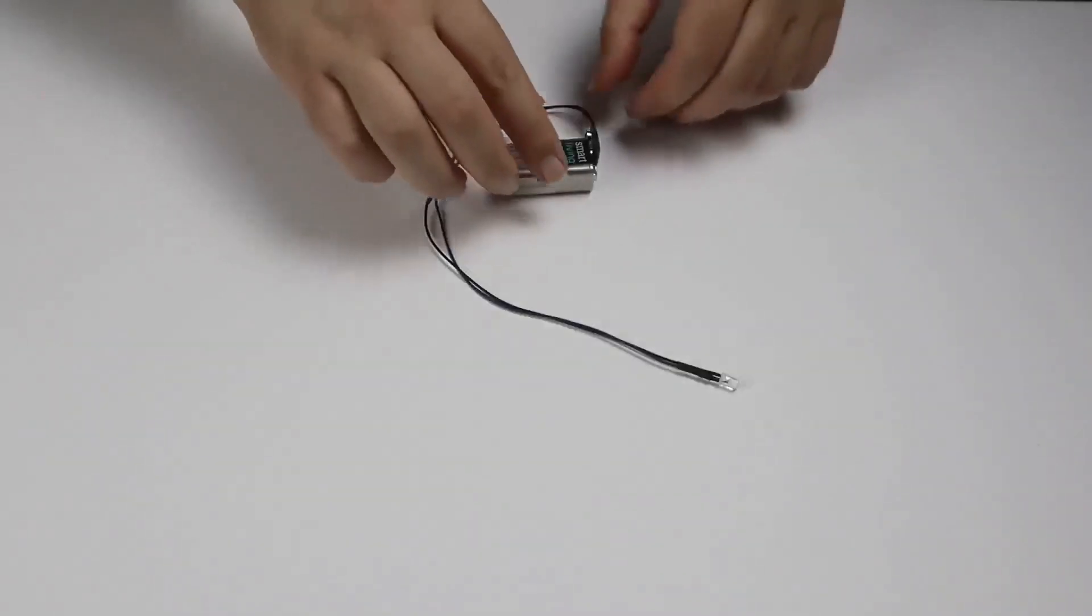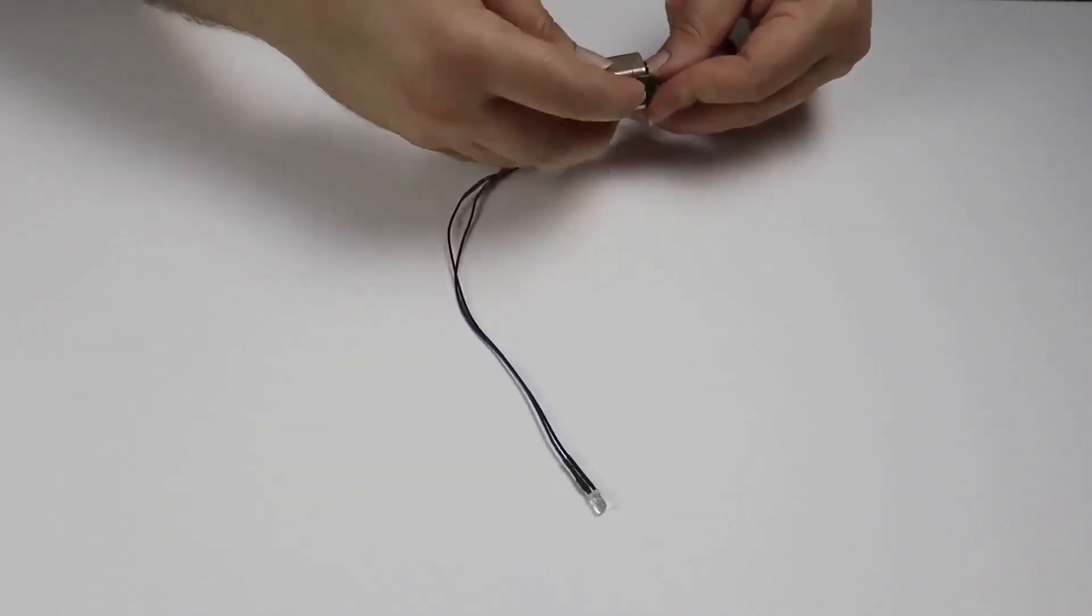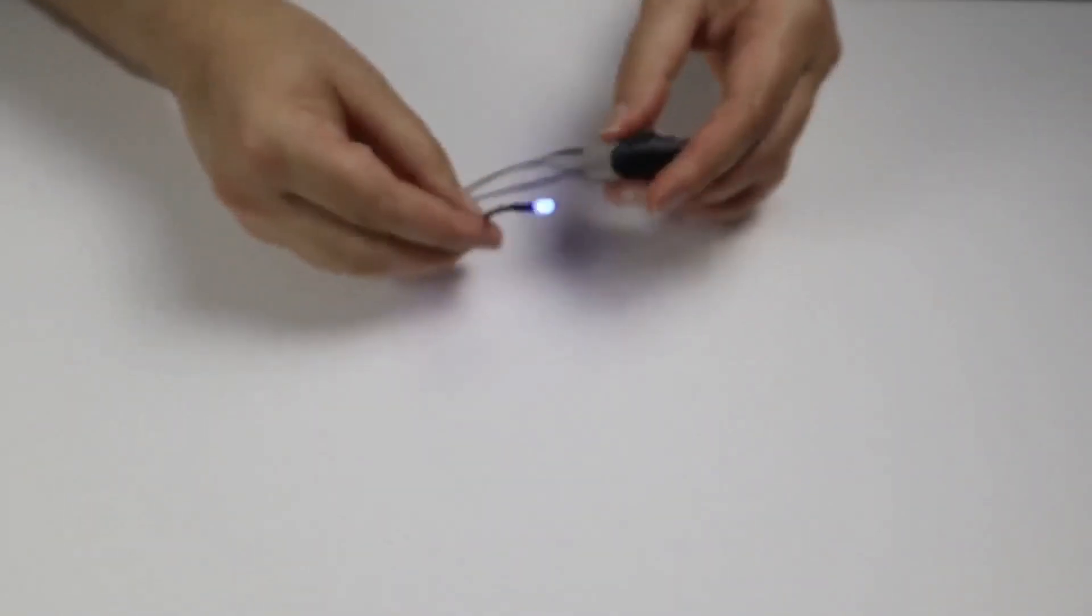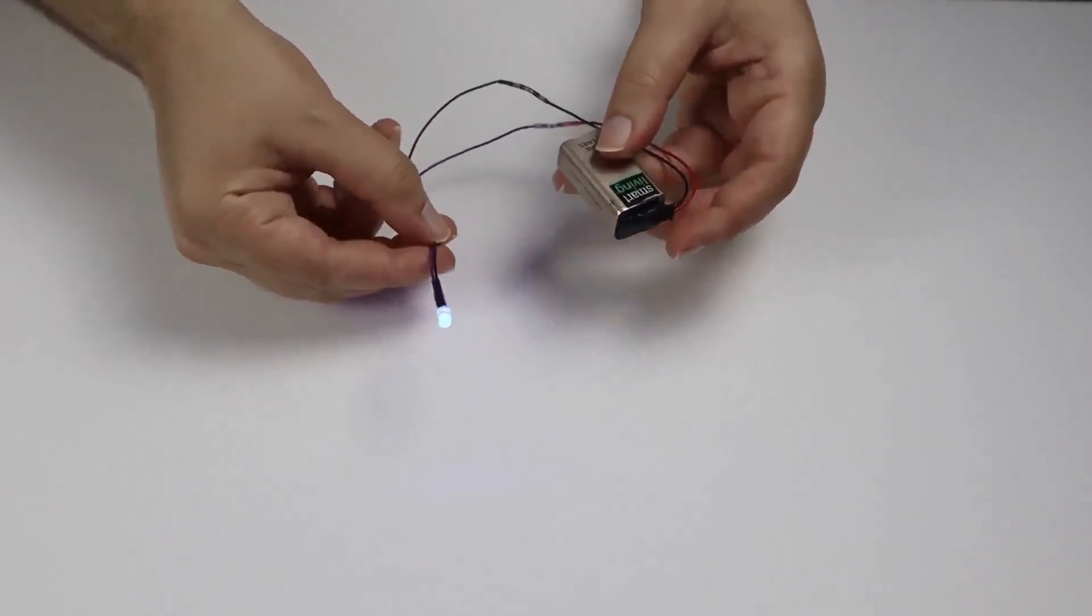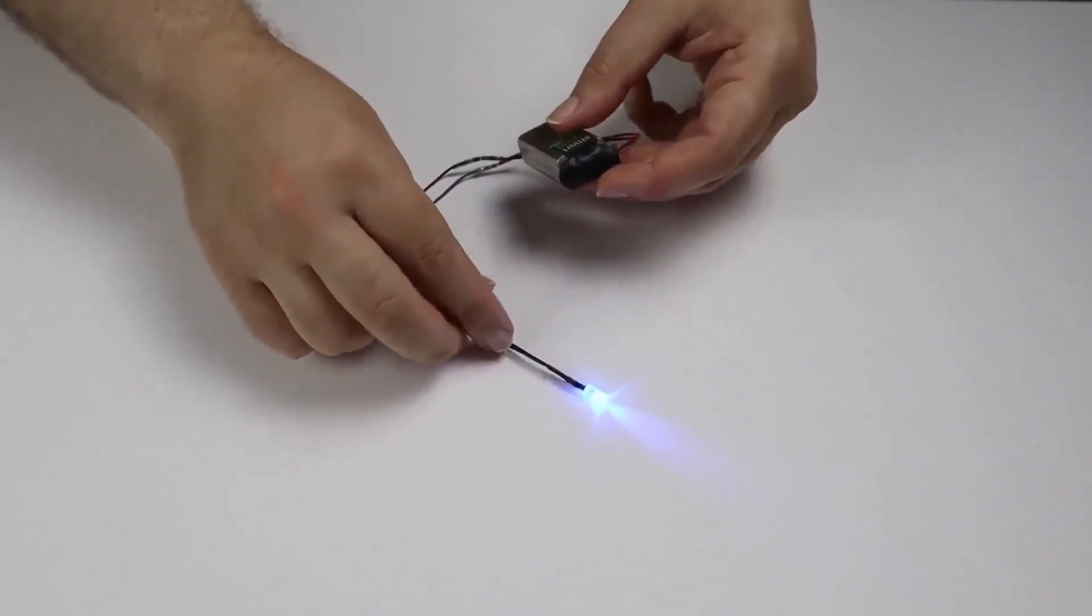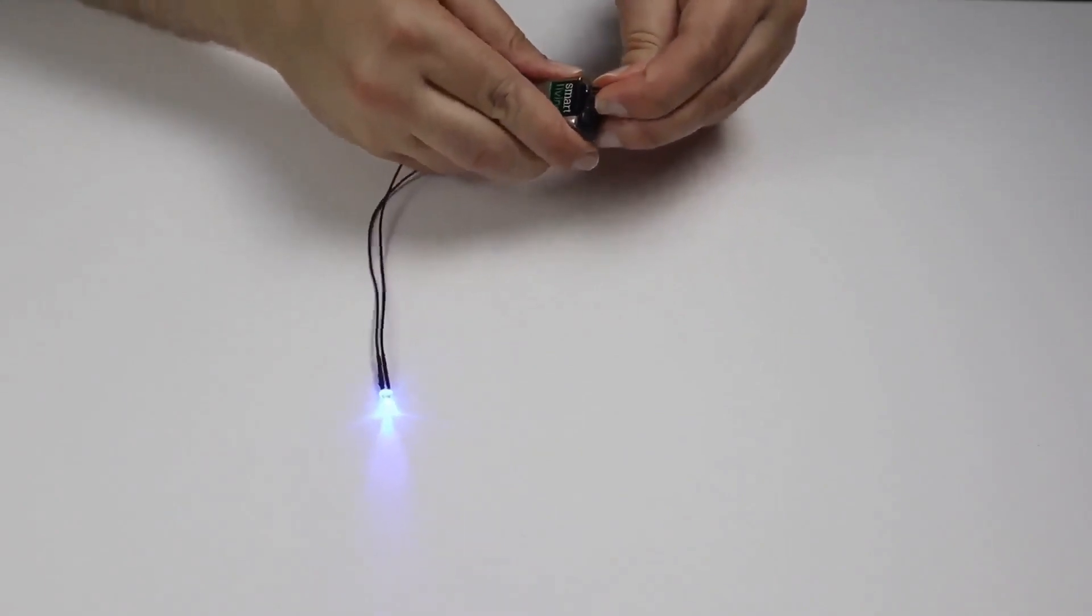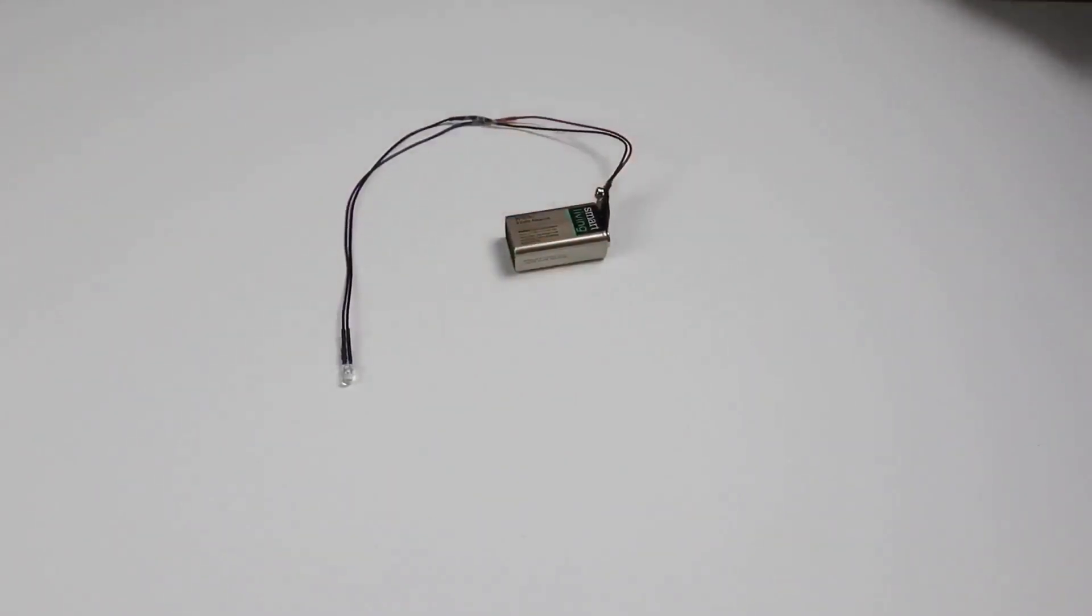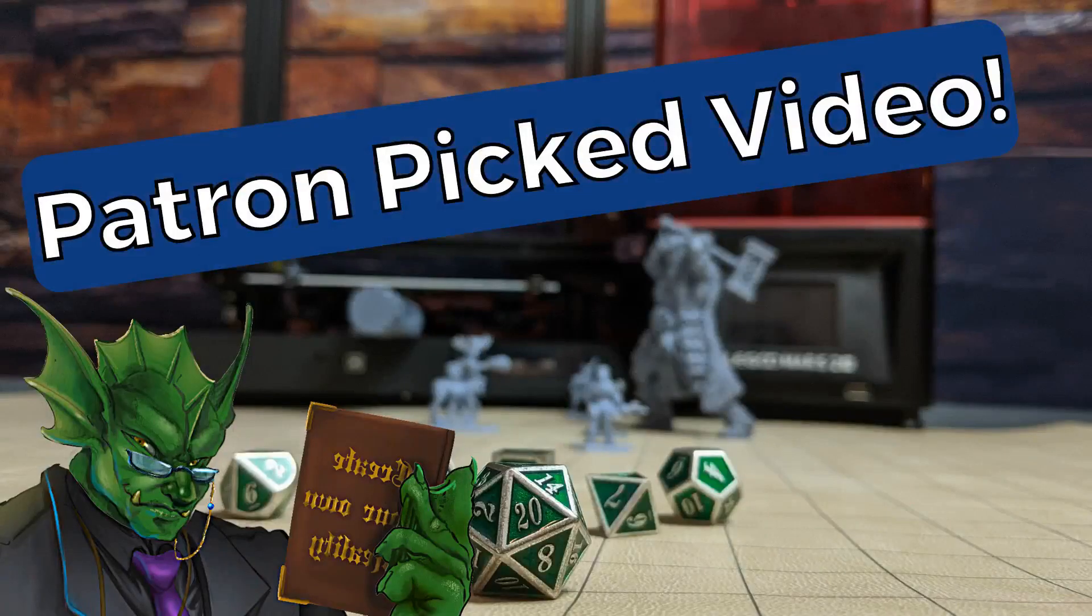And then once you have both connections done you're good to go. You can use this for curing the inside of hollow models, you can use this for doing resin welding whenever you need it. This is a really useful tool. And then as far as storage goes, all I do is disconnect the housing and turn it so it can't get accidentally connected again and then I put it away. And that's it, you just made yourself a UV pin light.